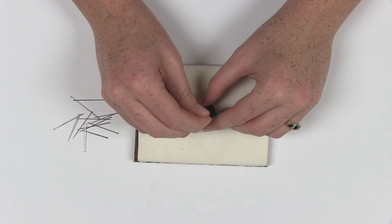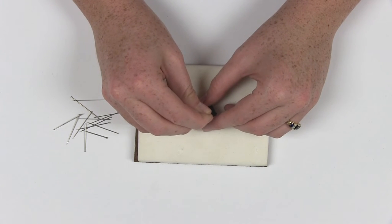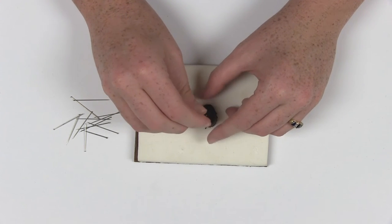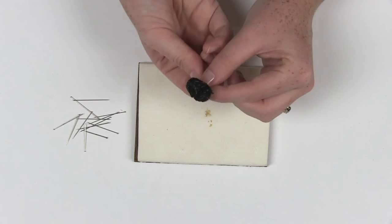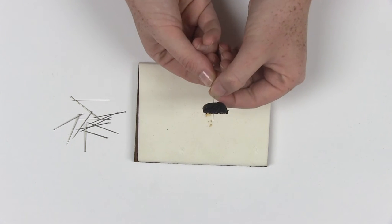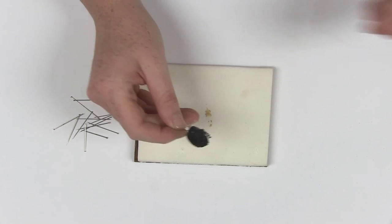Using your fingers or forceps, push the pin all the way through the insect and check that the pin is perpendicular to the body of the insect. The beetle should be one centimeter from the top of the pin.